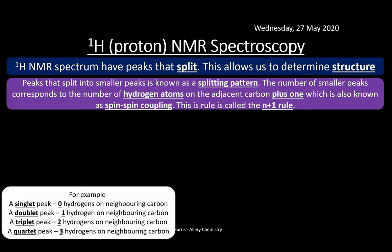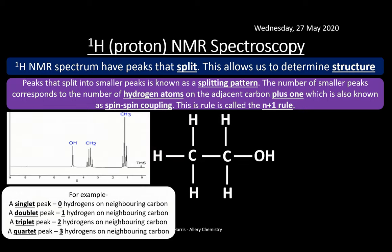You can see here a spectrum for ethanol. We have the OH, the CH2, and the CH3 groups shown on the spectrum. The splitting pattern here demonstrates the N plus one rule: the number of adjacent hydrogens plus one determines the number of sub-peaks in a splitting pattern.